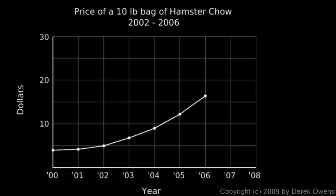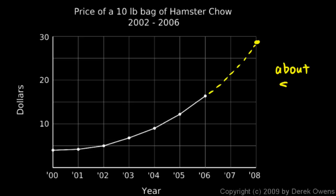We're asked to predict the price of a 10-pound bag of hamster chow in 2008. The data follows a curve rather than a straight line, but we continue that trend — the curve would extend something like this, hitting up at a little below 30. That's not exact, but it's a decent guess based on extending the trend. The extended curve follows nicely from the existing data, so the prediction for 2008 would be about $28.